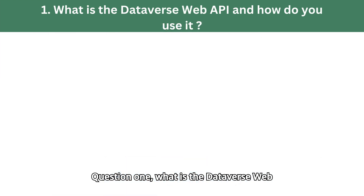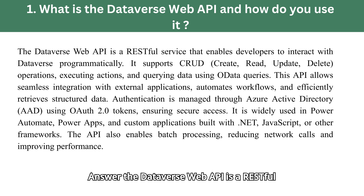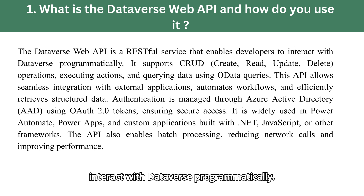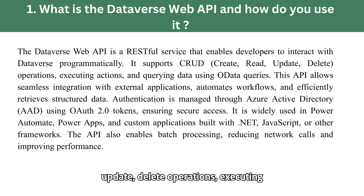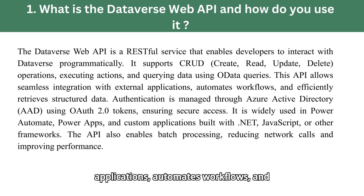Question 1: What is the Dataverse Web API and how to use it? The Dataverse Web API is a RESTful service that enables developers to interact with Dataverse programmatically. It supports CRUD — create, read, update, delete — operations, executing actions, and querying data using OData queries. This API allows seamless integration with external applications, automates workflows, and efficiently retrieves structured data.